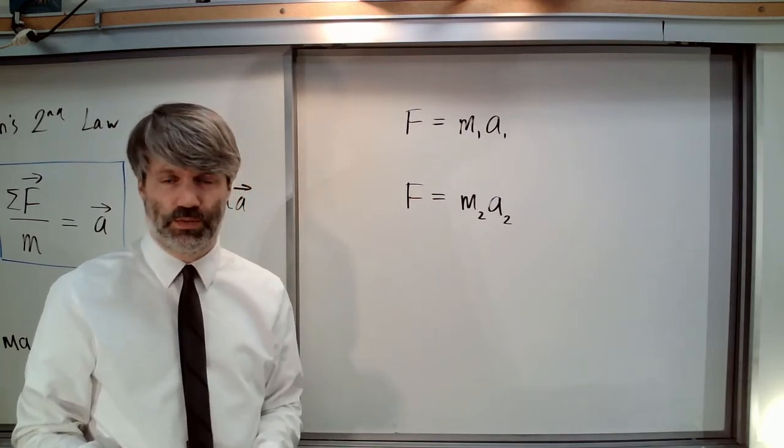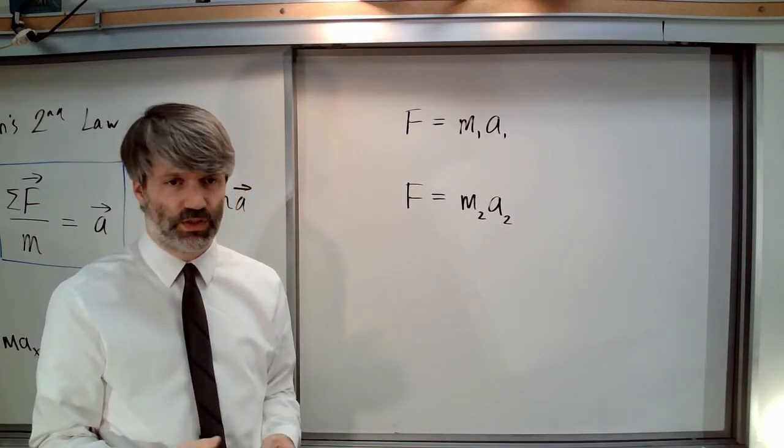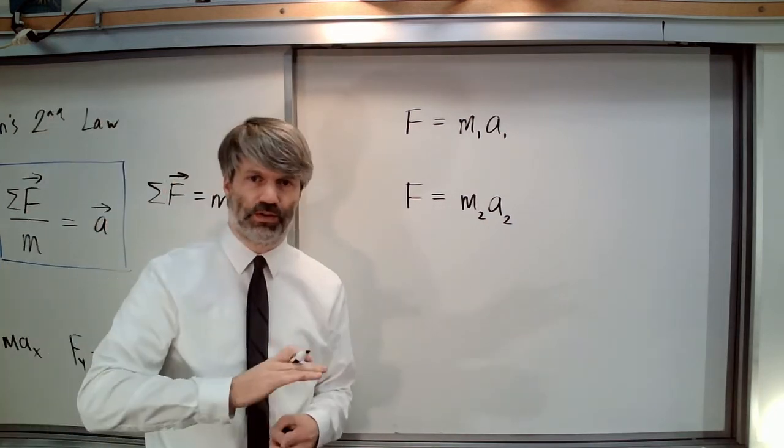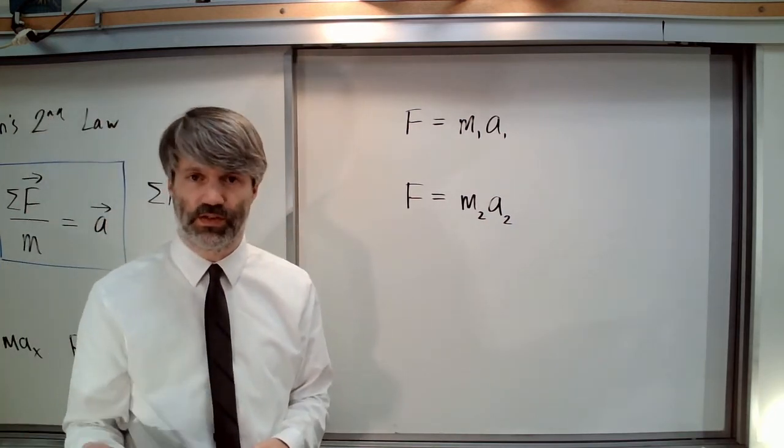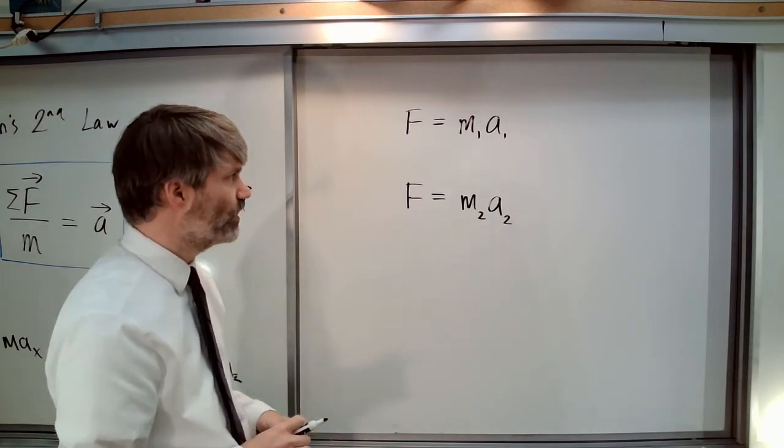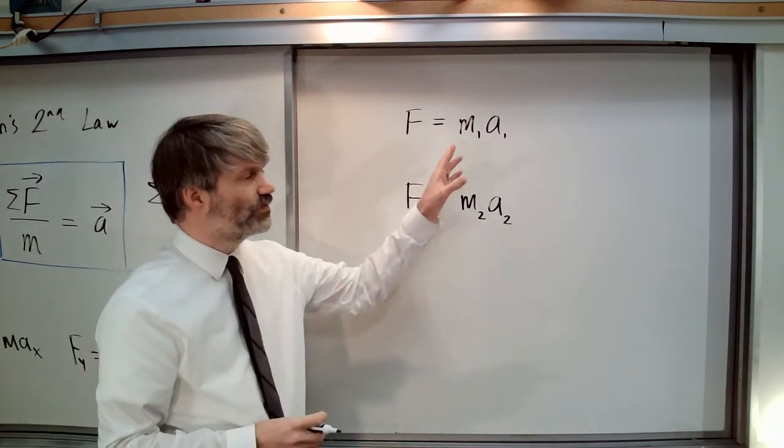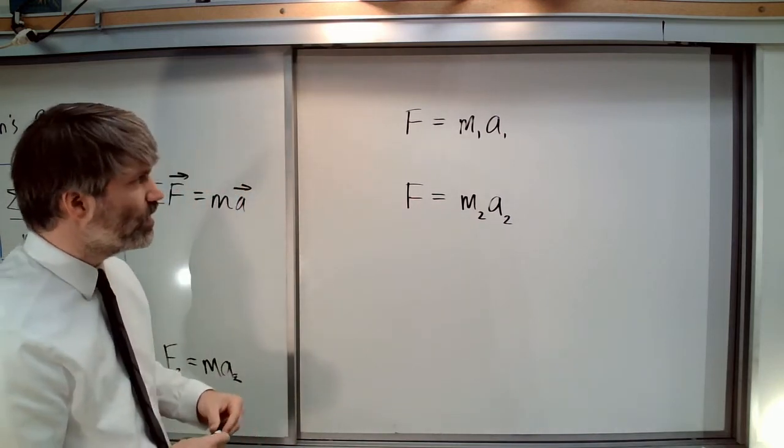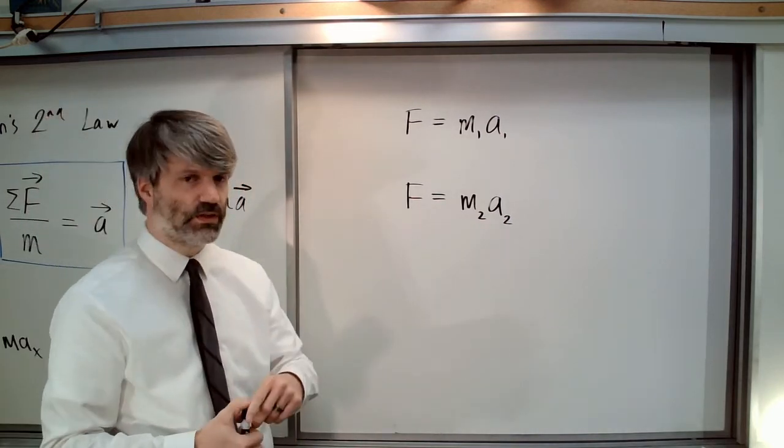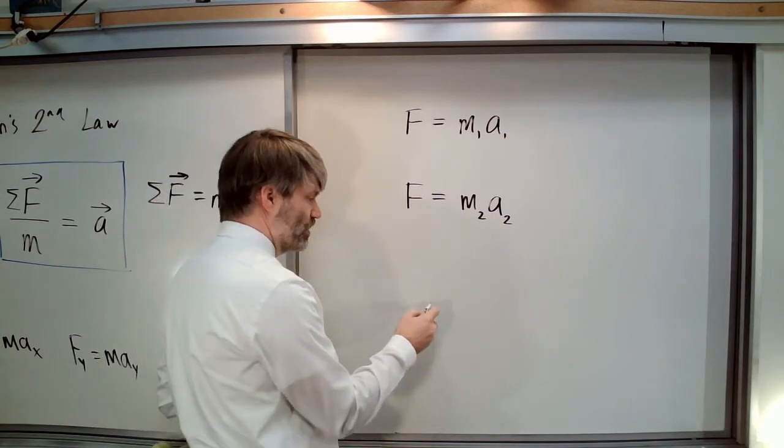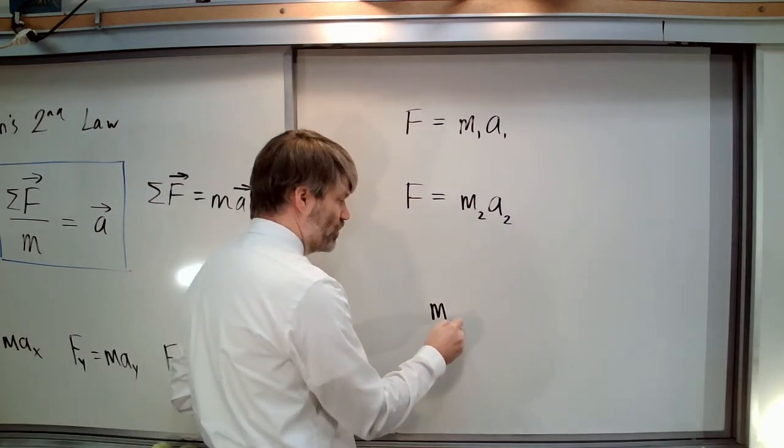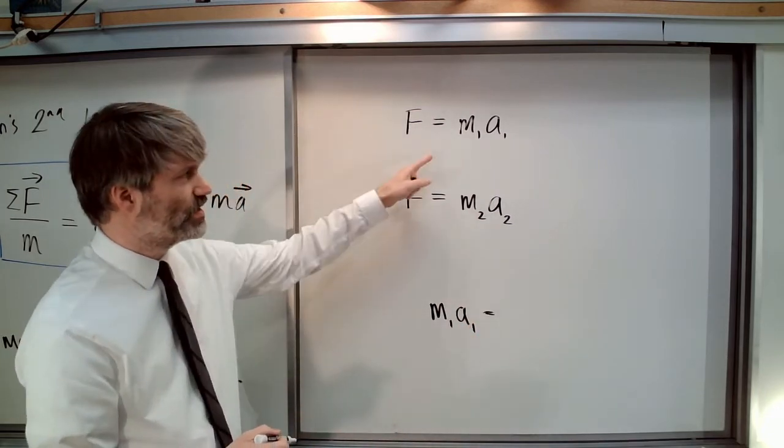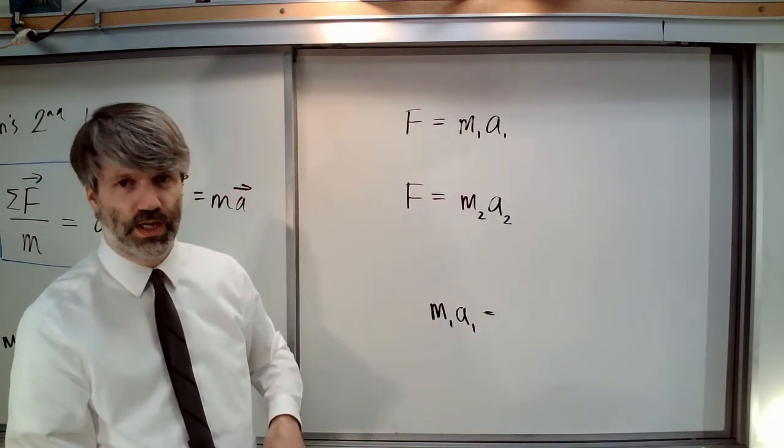So what's the acceleration of the second object? Right now we're assuming it's all in one dimension, so just positive and negative will tell us our directions. Now notice if the force is the same, we can write this out as M1A1. If those forces are the same, then M1A1 equals M2A2.